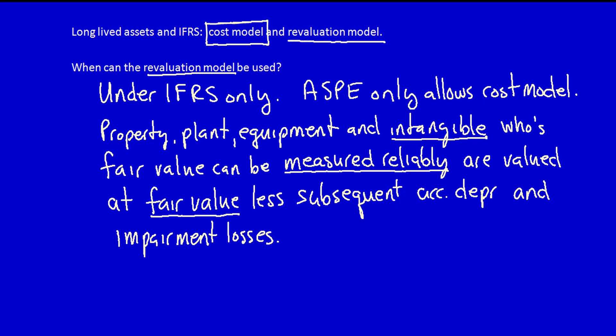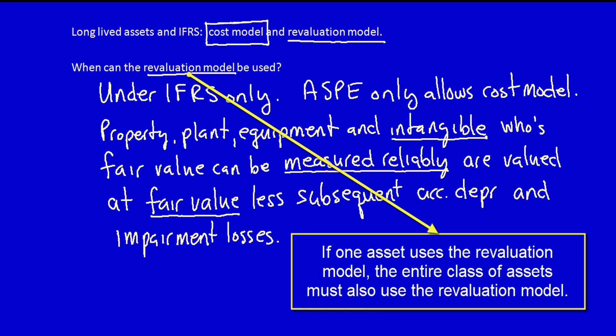If a company adopts the revaluation model, they must apply the model consistently to all assets in the same class. A class is a group of assets with similar natures. Therefore, if an entity decides to use the revaluation model for land, then all land owned by the company must be valued using the revaluation model. However, entities can choose to use the revaluation model for some classes — for example, land — and then use the cost model for other classes, such as equipment or buildings.